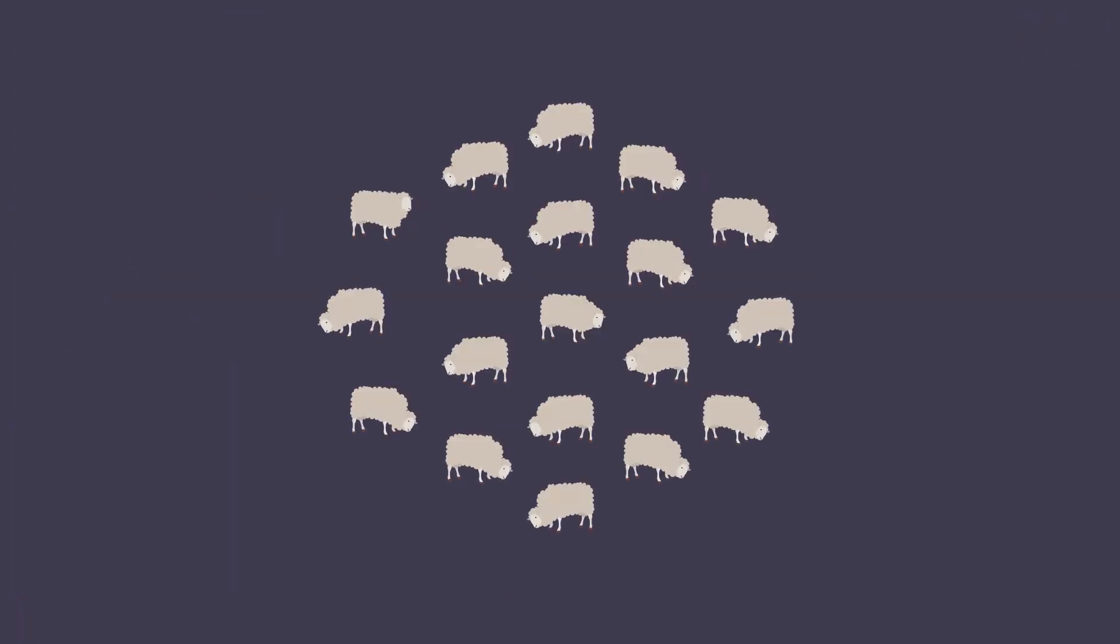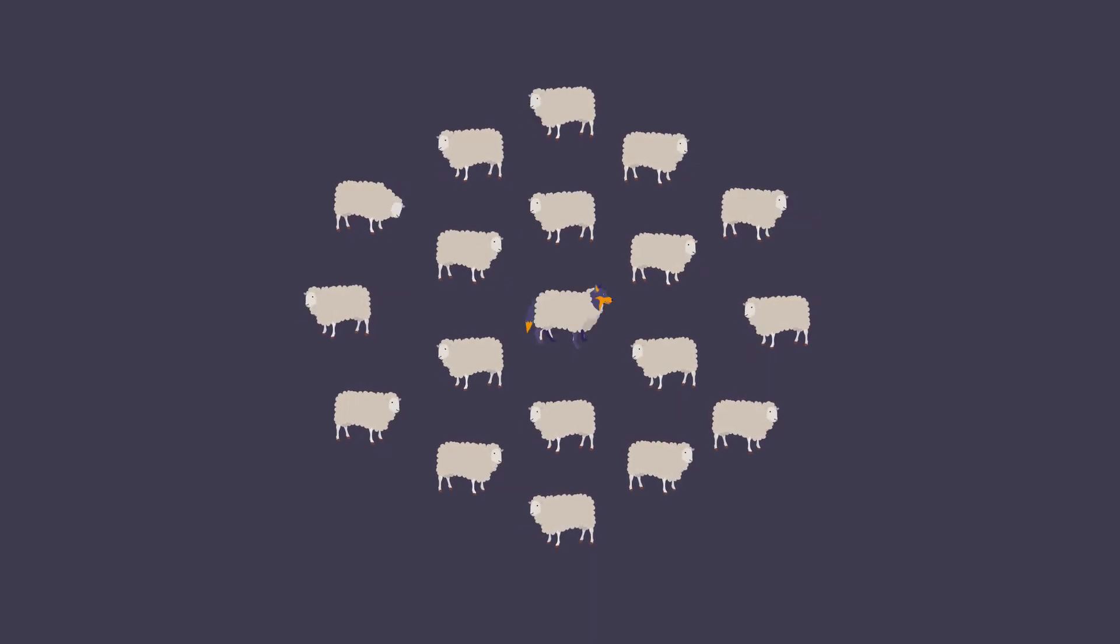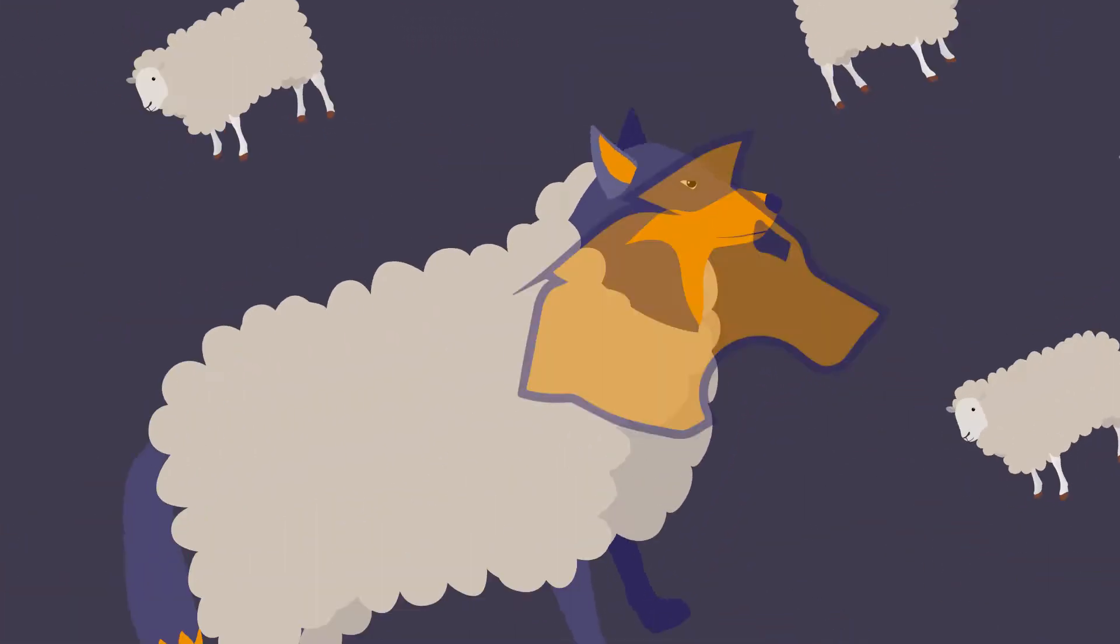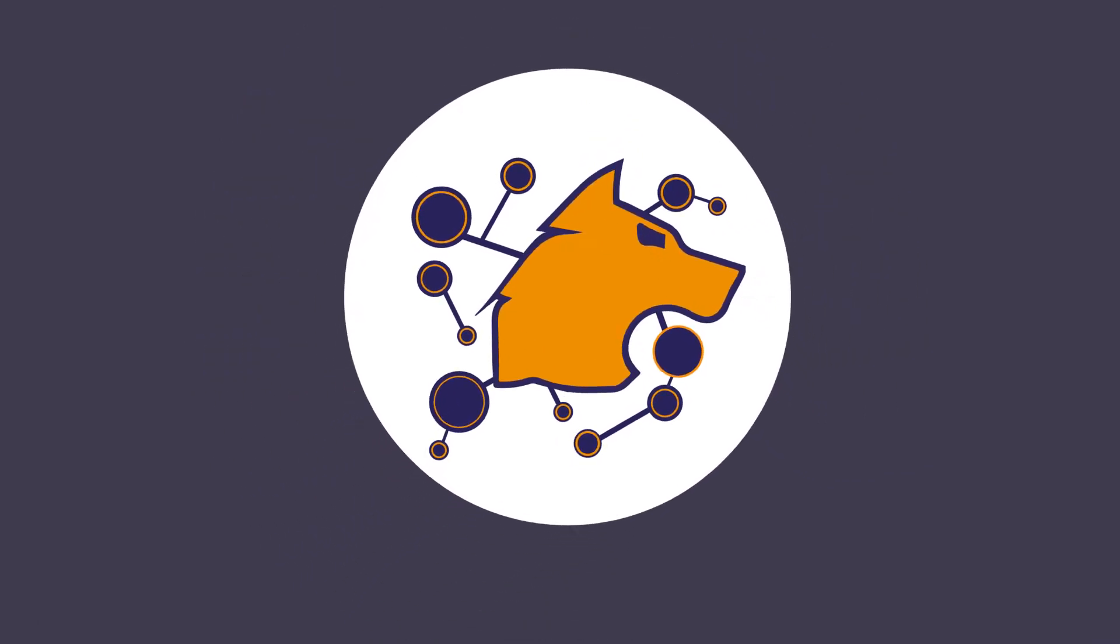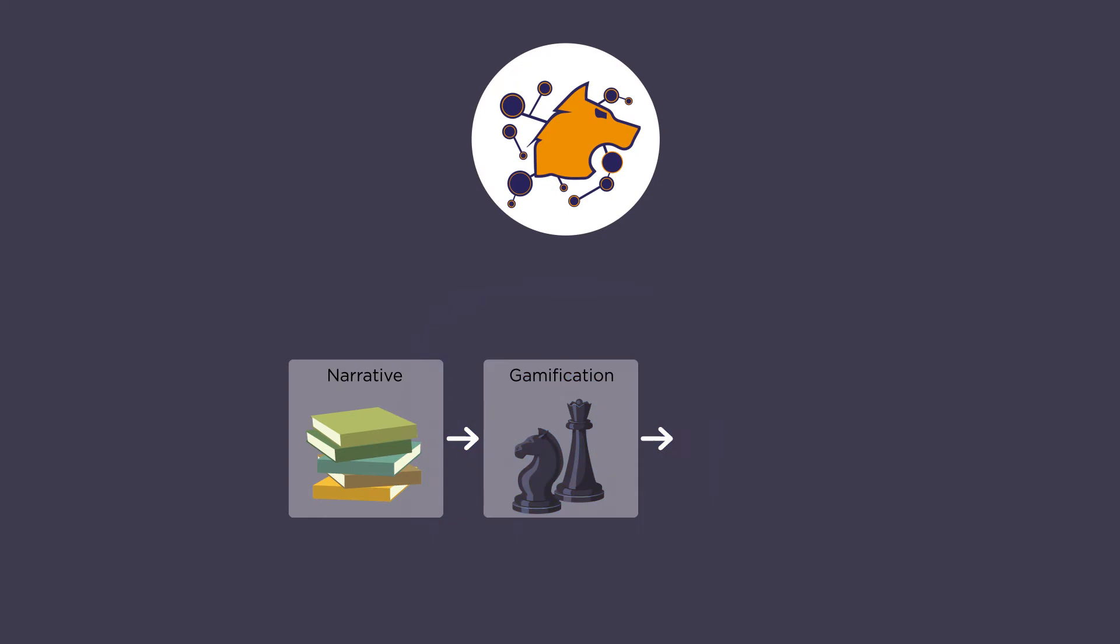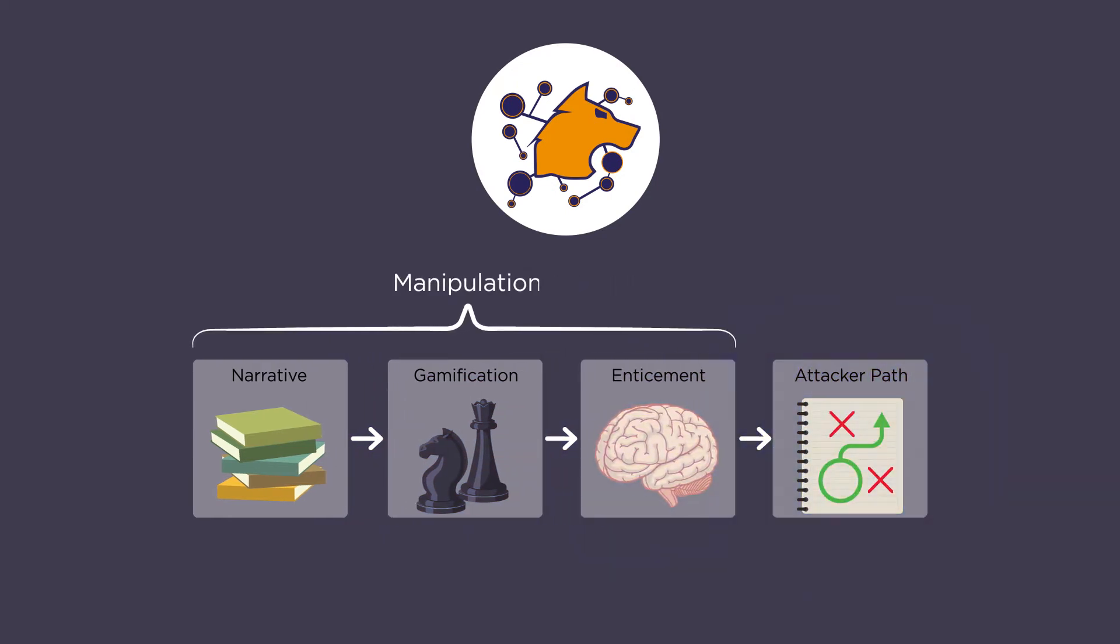Lupovis delivers an offensive strategy where the hunter becomes the hunted, transforming your network from a flock of sheep to a pack of wolves. Lupovis implements an AI-driven manipulation strategy comprising elements of narrative, gamification, and enticement, ensuring that the attacker is continually engaged within the deception.